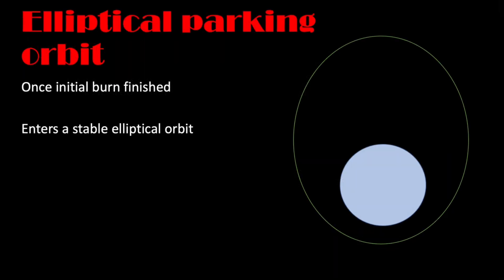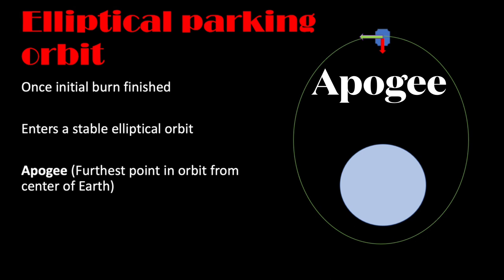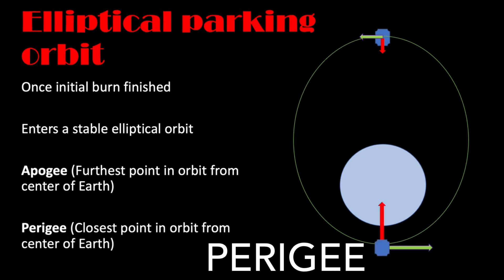Now let's take an elliptical parking orbit. It's stable and it has two very important points. A point which is furthest away from the earth, and we call that the apogee, and the closest is the perigee.